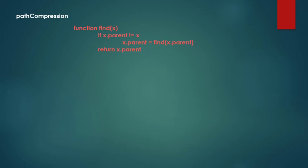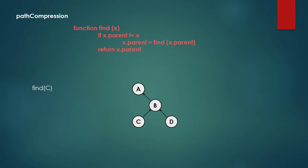We set every vertex's parent to be the representative, until we reach the representative itself. For example, we have this tree-like structure and we want to find C. Because of path compression, we call find recursively on C's parent B, and find that B's parent is the representative. So we attach C to be a direct child of the representative.